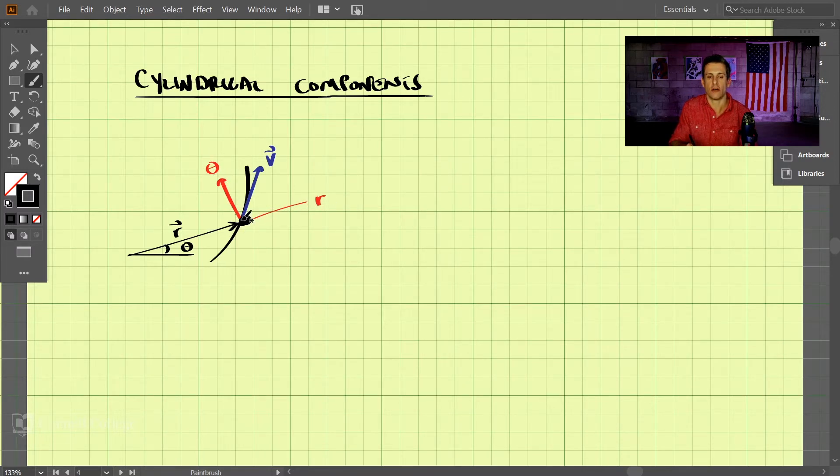This theta direction is called the transverse direction. And we know the particle has a velocity here, and so we can break down the particle's velocity into both of those components. So the velocity, I'll just write down this equation first, and then I'll explain it.